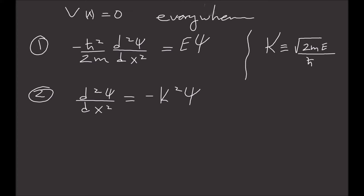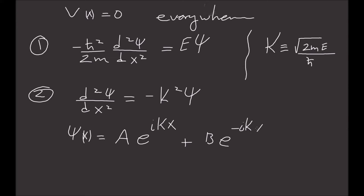Equation number two is the classic wave equation, and we know the solution for it. The solution is psi of x equals some constant A times e to the ikx, plus some constant B times e to the minus ikx. So this is the solution for equation number two.